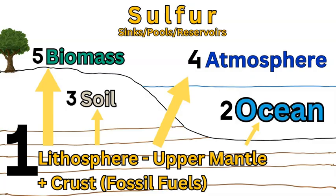Sulfur has five main sinks, pools, or reservoirs. The first is the lithosphere, second is the ocean, third is soil, fourth is the atmosphere, and fifth is biomass. In terms of quantities, the lithosphere is by far the largest storage of sulfur, followed by the ocean, then soil and biomass, and last is the atmosphere.